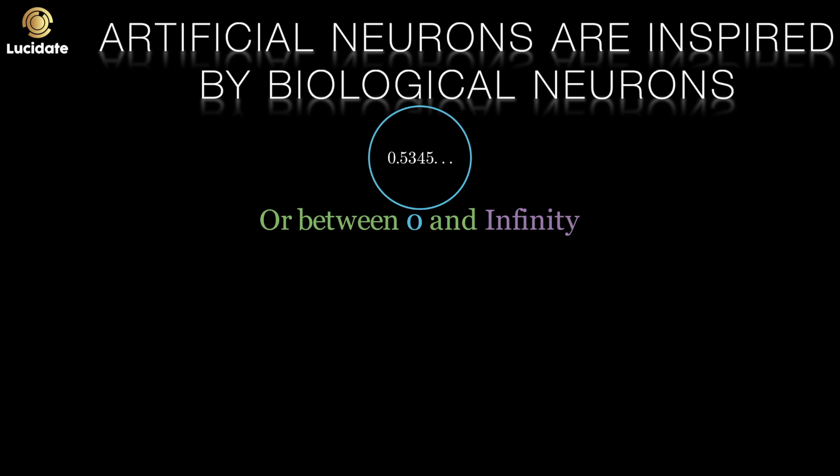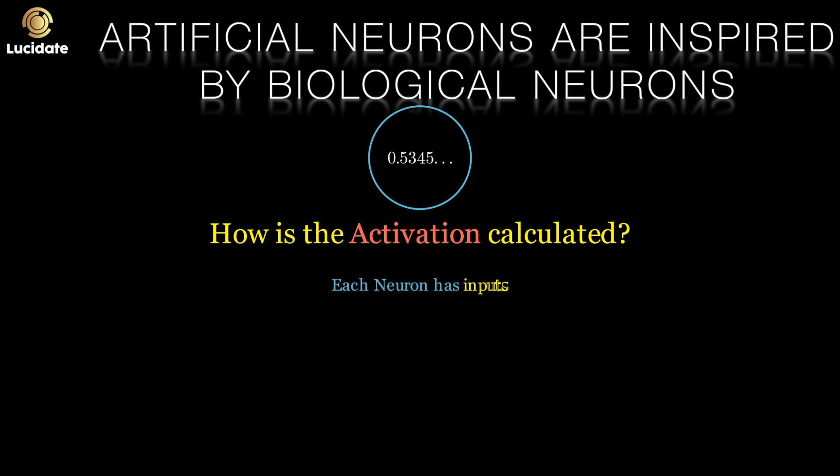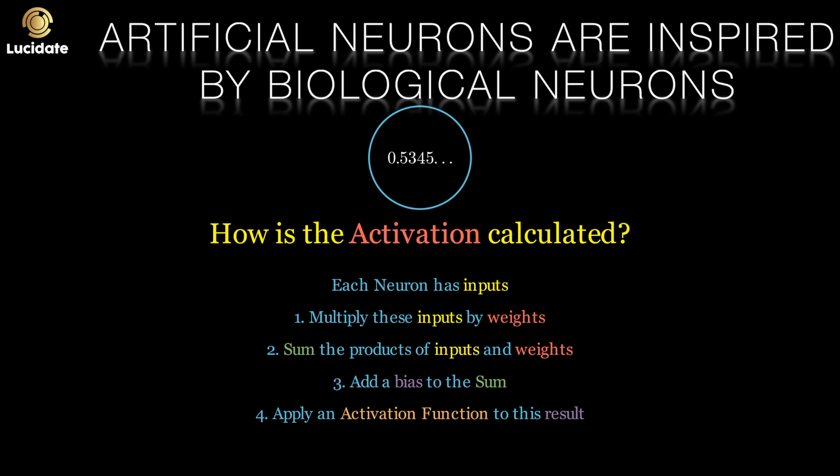This activation isn't just chosen at random, it's based on inputs to this artificial neuron. A simple four-step process determines the output. To calculate the activation for a particular neuron: 1. Take each input for that neuron and multiply it by a weight. 2. Then sum all of these products. 3. Then add a bias term to this sum. 4. Finally send this total through something called an activation function to generate the neuron's output.